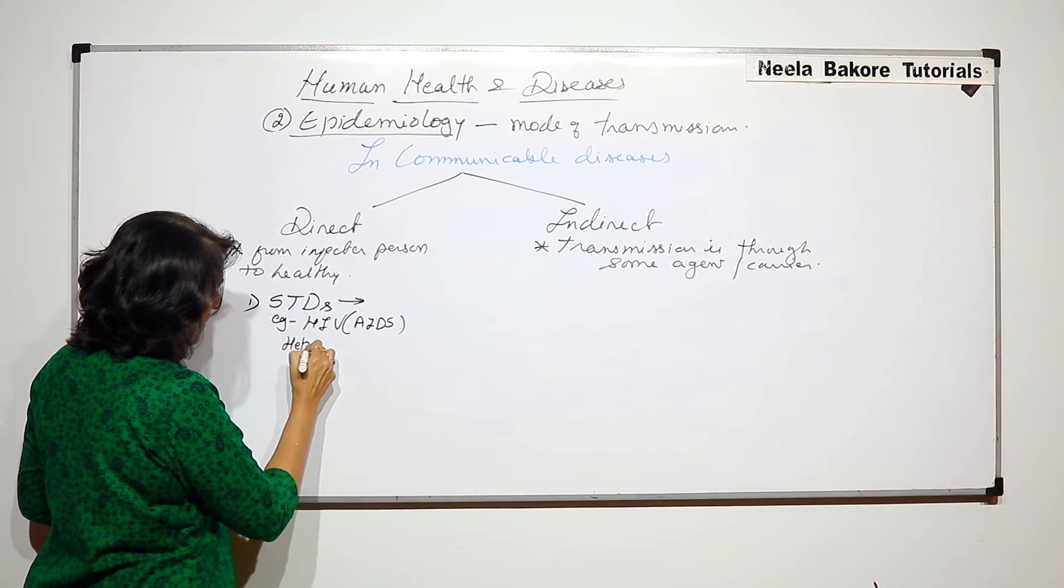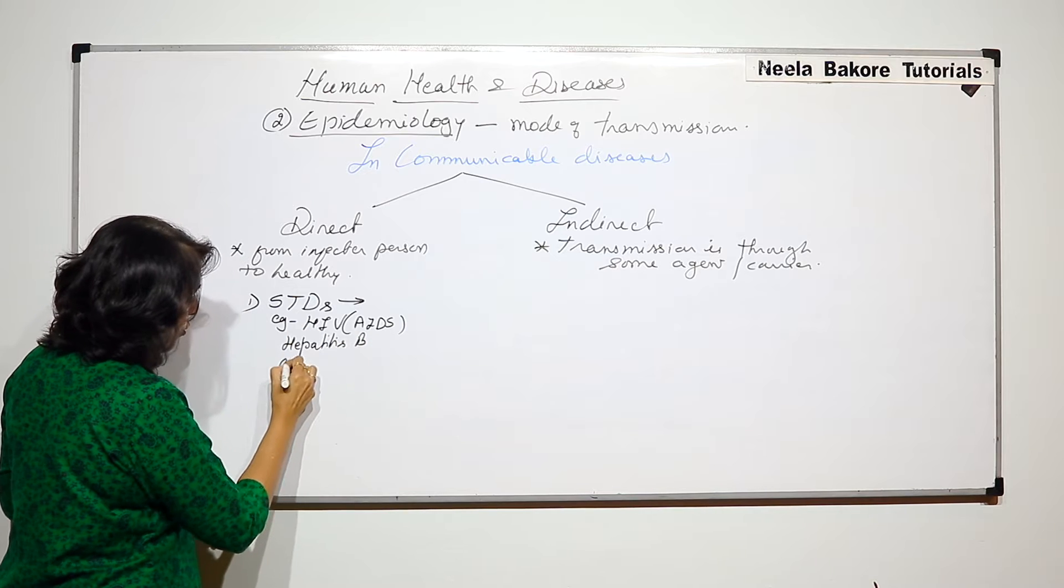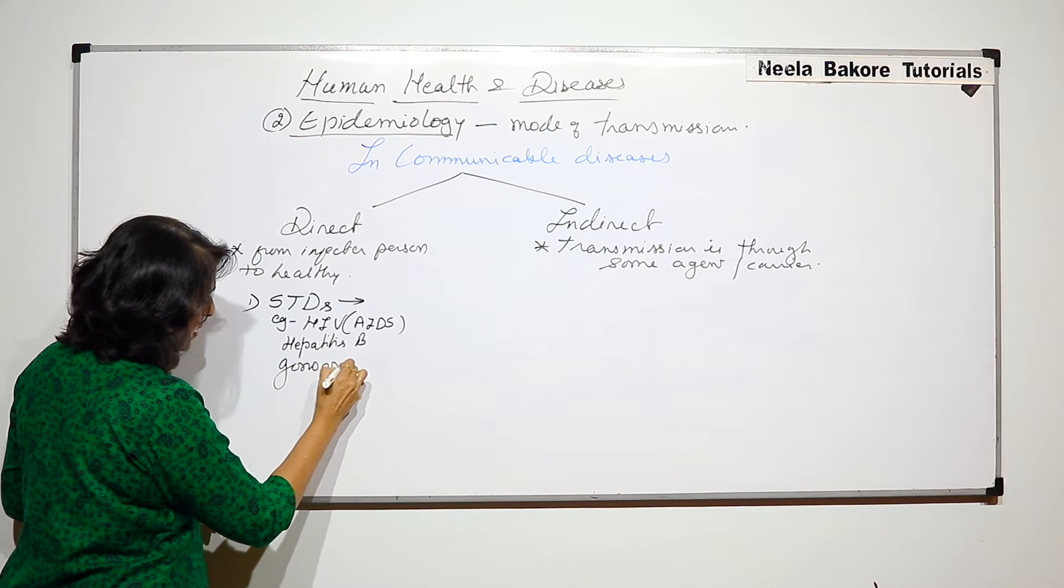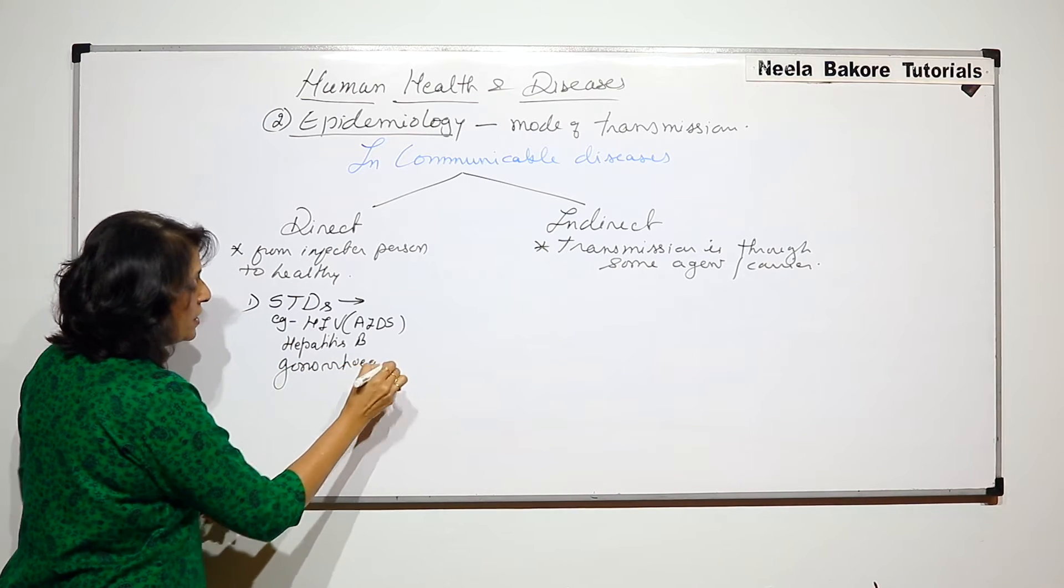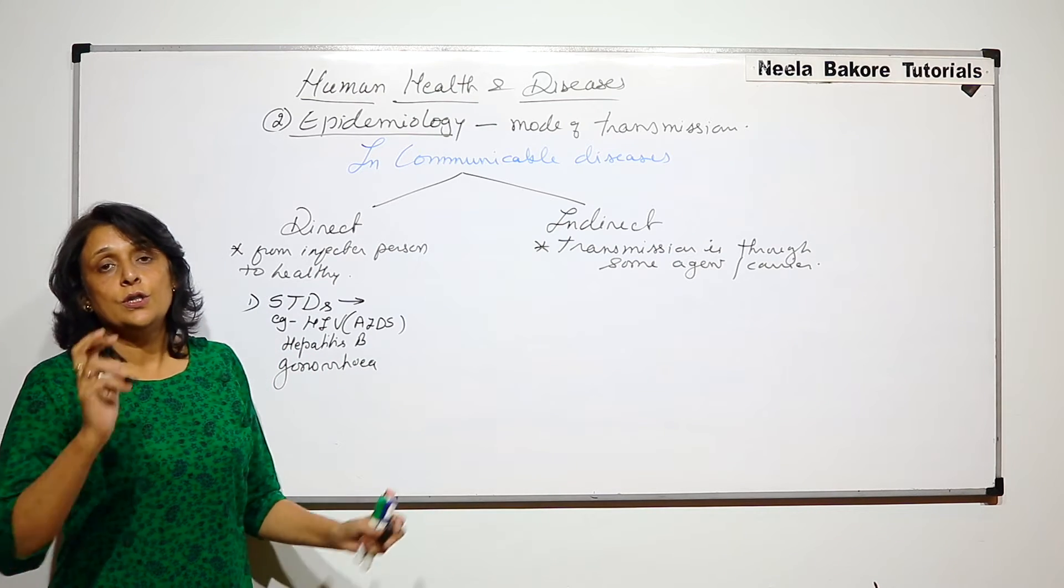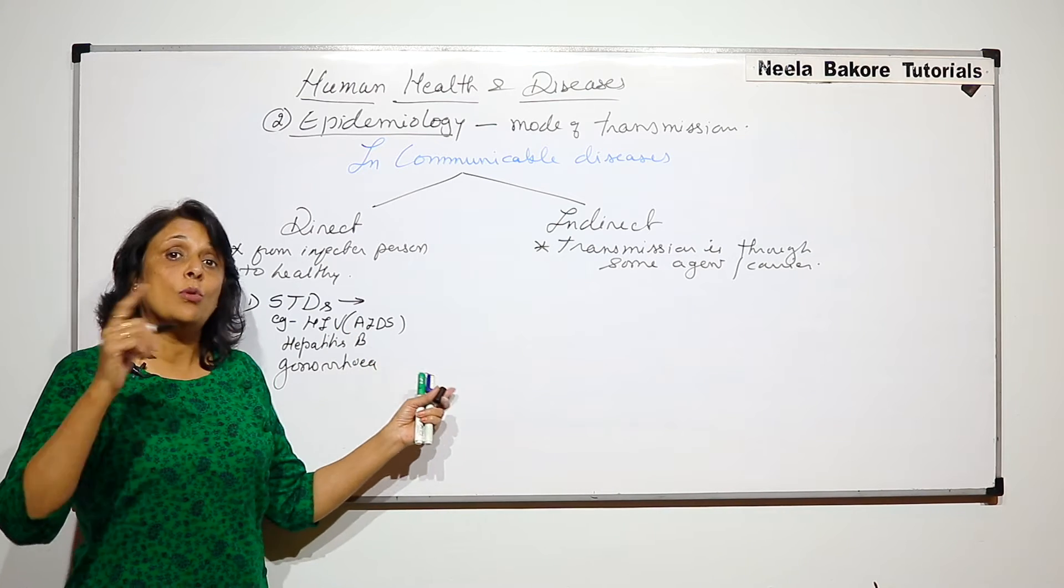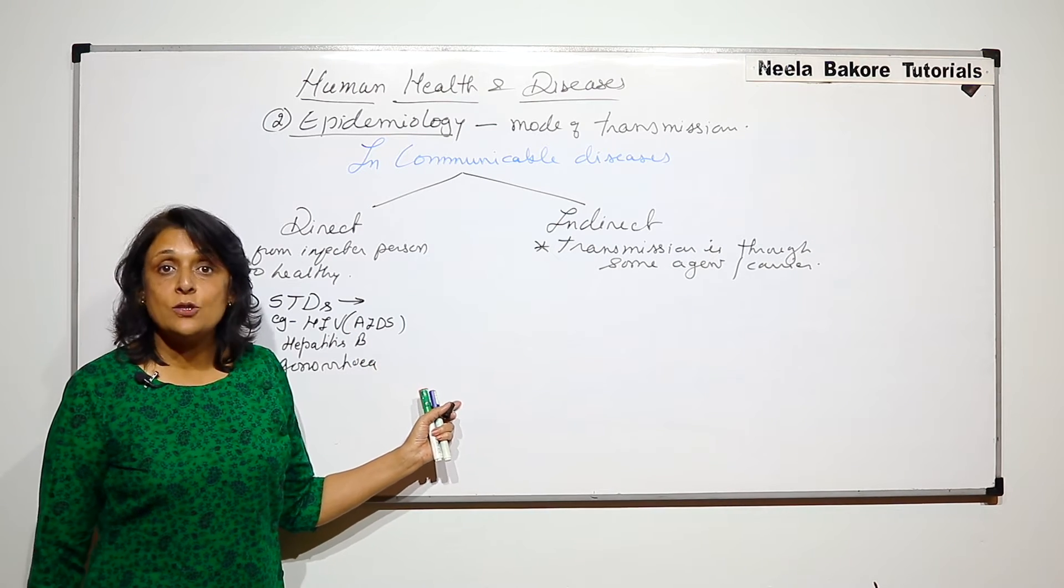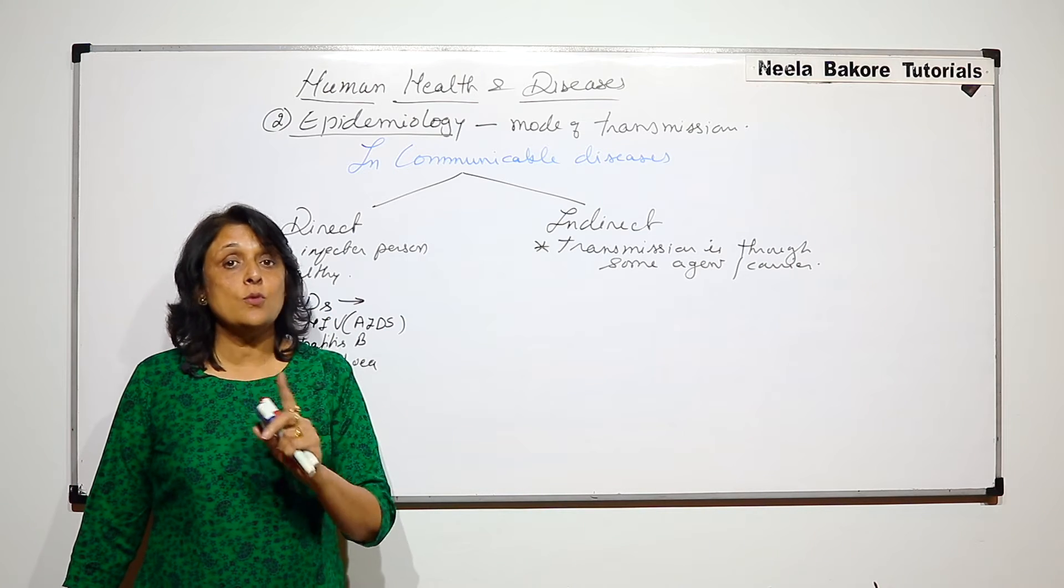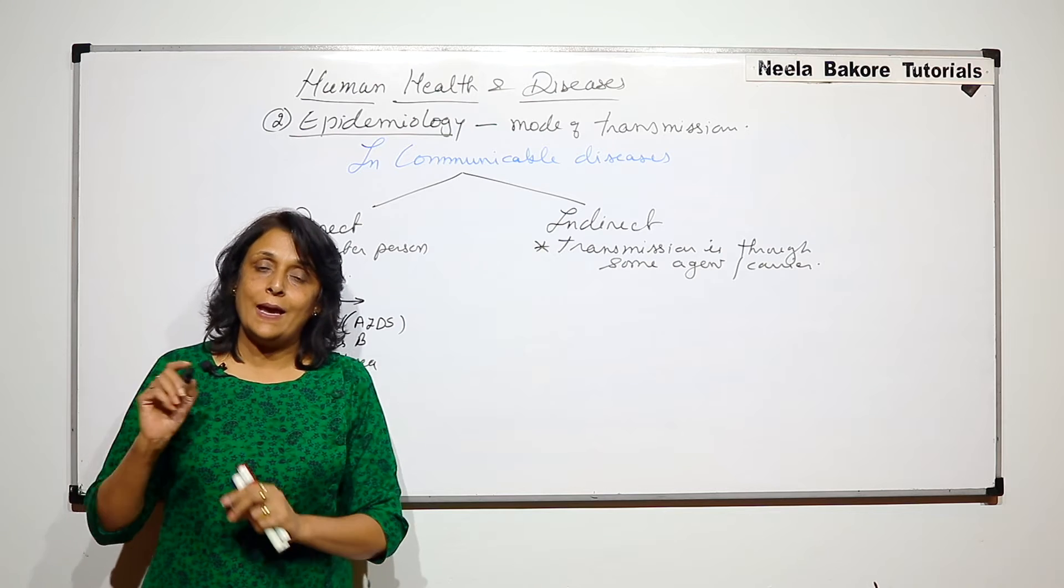hepatitis B, gonorrhea, syphilis, etc. These are STDs. So say one person has this disease and through sexual contact it will be passed on to the other person who is healthy. So it is direct from the infected to the healthy person.